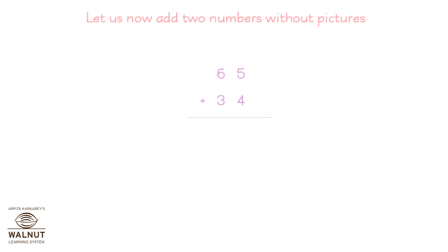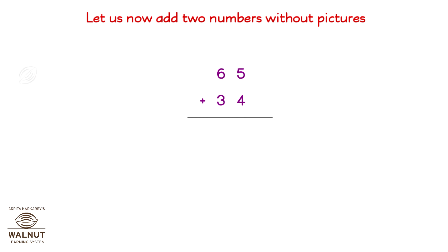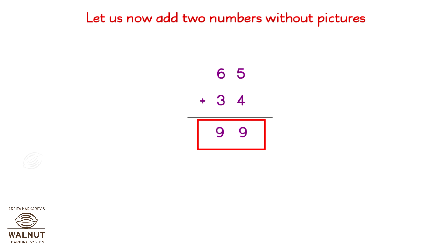Let us now add two numbers without pictures. 65 plus 34. First, we add numbers in the units place: 5 plus 4 is 9. Then, we add numbers in the tens place: 6 plus 3 is 9. So, the answer is 99.